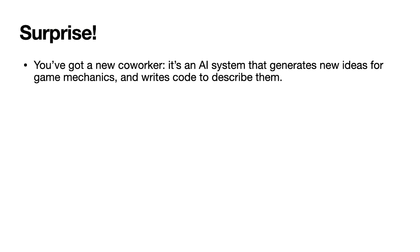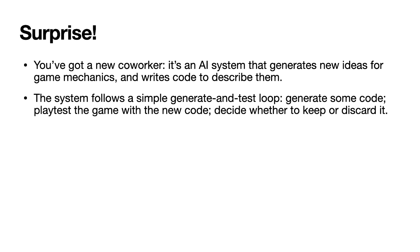There's a little twist here: we're not just building a roguelike, but there's a new co-worker — an AI system we've bought — that will help us invent new game mechanics for our roguelike. What it's going to do is a generate-and-test loop where it makes some code describing a new mechanic, play-tests the game with this new mechanic involved, and then decides whether to keep it, show it to us, or just delete the code. In order for this system to work it needs to be able to do a few things.